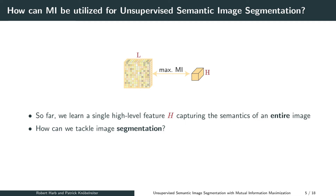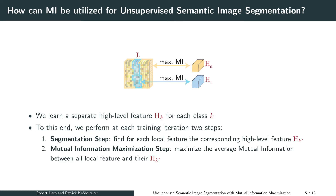So far, we have discussed how we can learn a single high-level feature that captures the semantics of an entire image. Now, let us see how we tackle image segmentation in InfoSec. Our approach is inspired by local deep infomax, with the major difference that we now want to learn a separate high-level feature for each class.